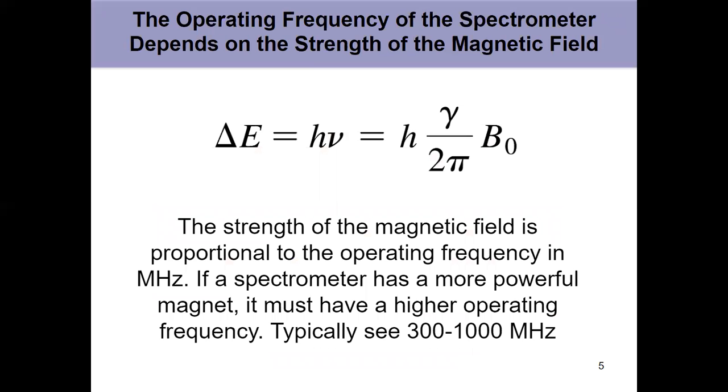The strength of the magnetic field is proportional to the operating frequency. The difference in energy corresponds to Planck's constant, the gyromagnetic ratio, the constant that depends on the nuclei we're dealing with, the strength of the magnetic field in Tesla, and 2π. This is not an equation that I would expect you to work with. Just know that the strength of the magnetic field is proportional to the operating frequency in megahertz. Higher frequency is better resolution, as they're more powerful, give better readings, but they're more expensive.